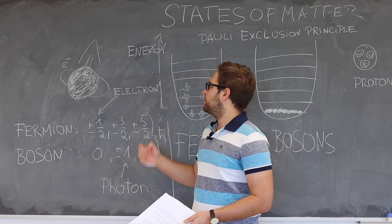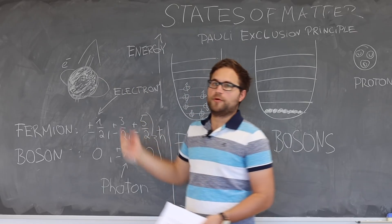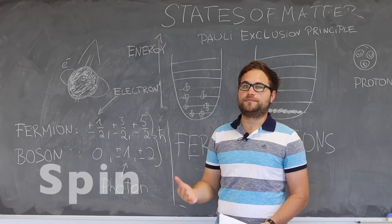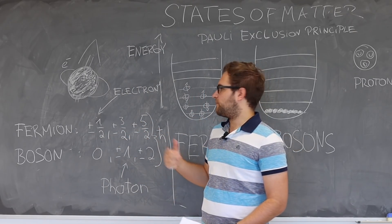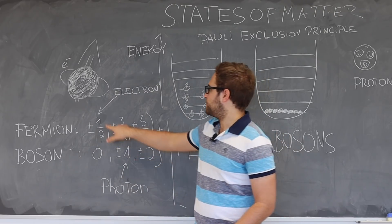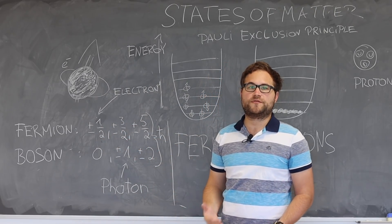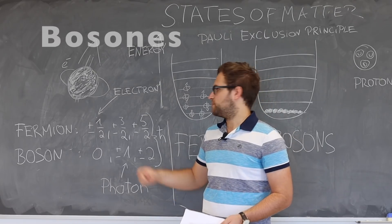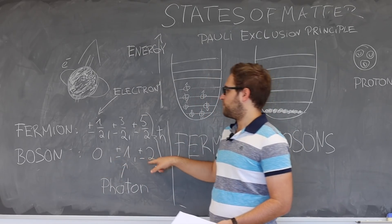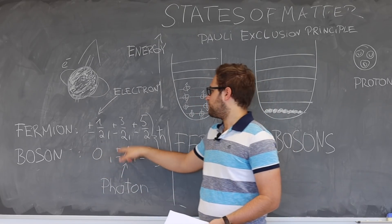For that, it's important to know that we can classify each composite particle by its intrinsic angular momentum which is called the spin. Particles whose spin takes half-integer values of Planck's constant h-bar, for example plus minus one-half, plus minus three-halves, or plus minus five-halves, are called fermions.